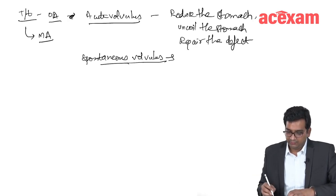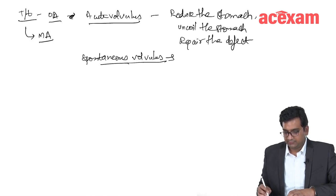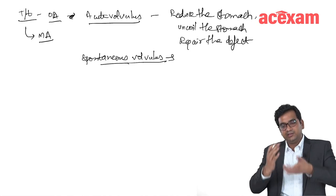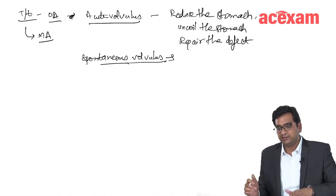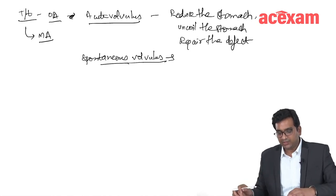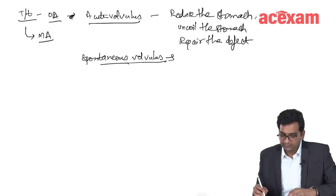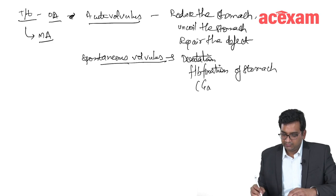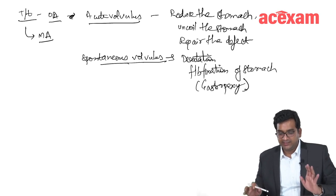If there is a spontaneous volvulus or mesenteroaxial type, there is no defect and no herniation into the chest. In that case, we simply derotate the stomach and then fix it so it will not rotate again. This derotation followed by fixation of the stomach is also known as gastropexy.